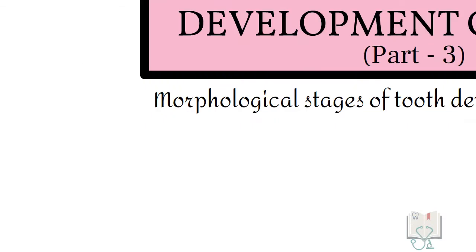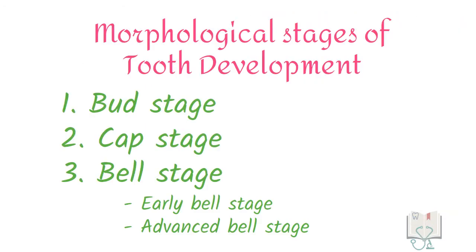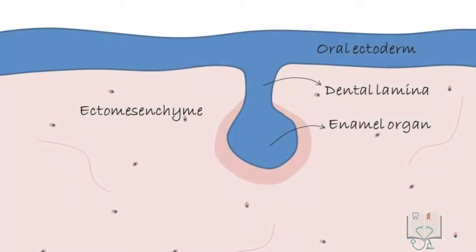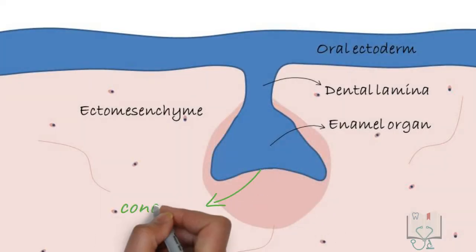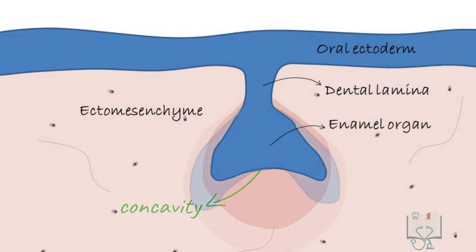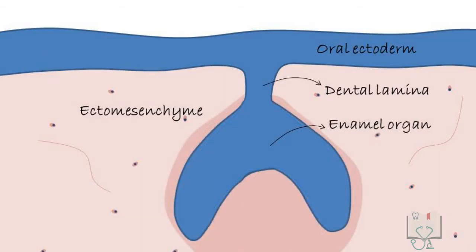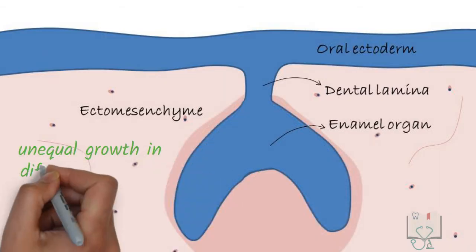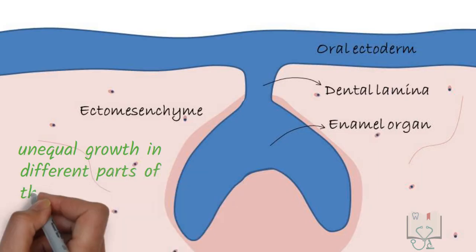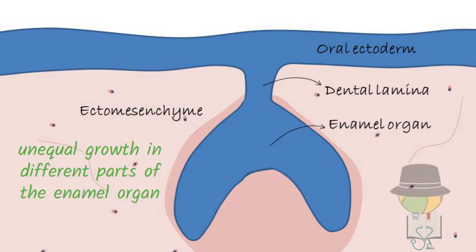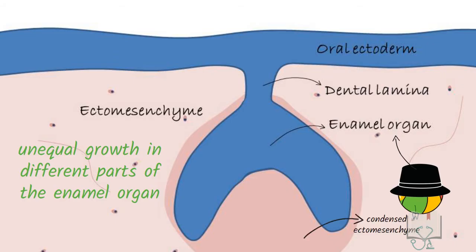In the morphological stages of tooth development, the bud stage is followed by the cap stage. In the bud stage, as the enamel organ grows in size, it develops a concavity and attains a cap shape which then increases in size. This change in shape is because of unequal growth in different parts of the enamel organ. The tooth germ appears like a cap of enamel organ kept over a ball of condensed ectomesenchyme.